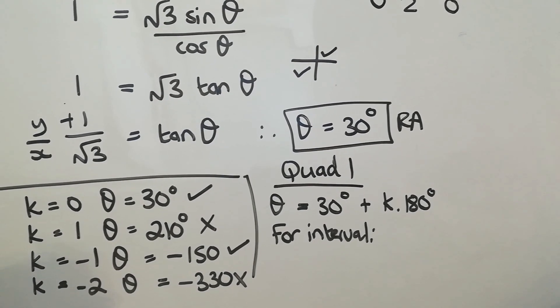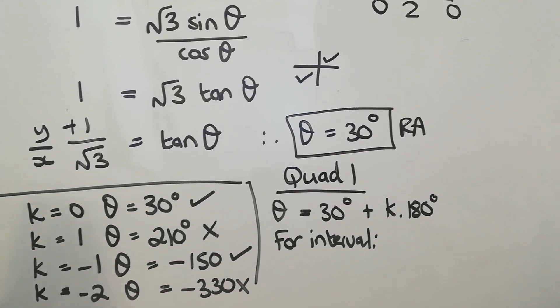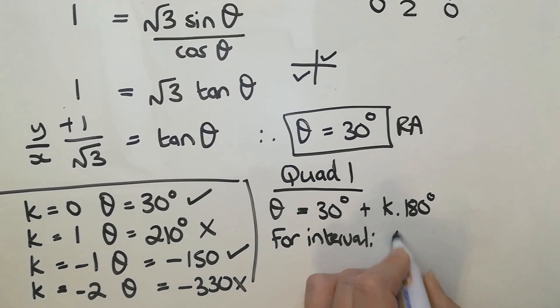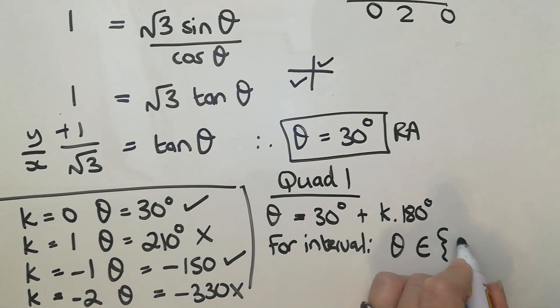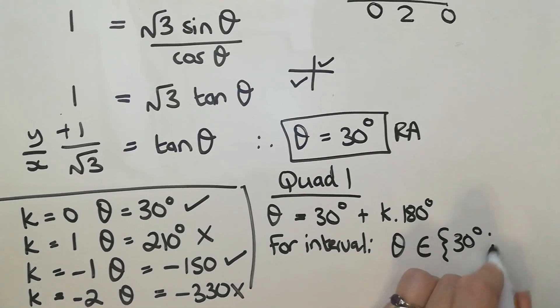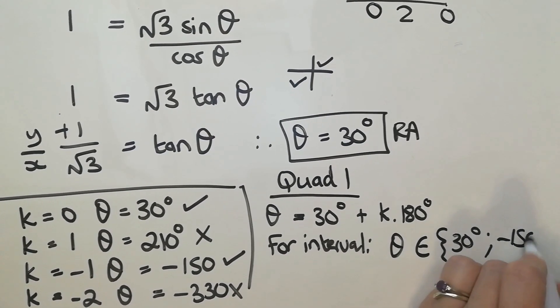Turns out to not be that many. All right. So my final answer then. My final answer then is theta is an element of curly brackets because I'm listing. And it's going to be 30 and negative 150.